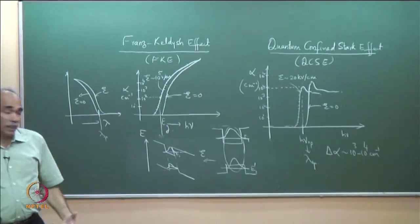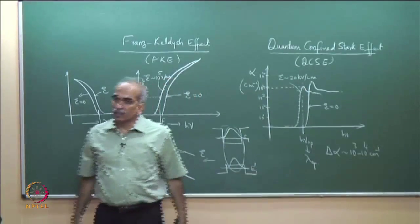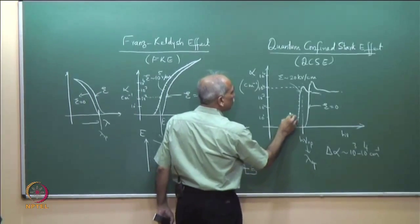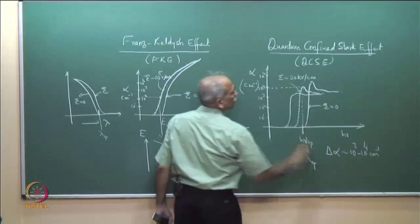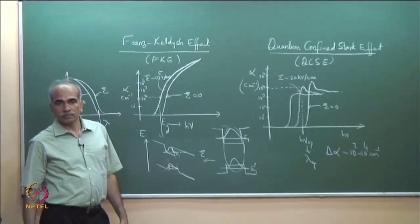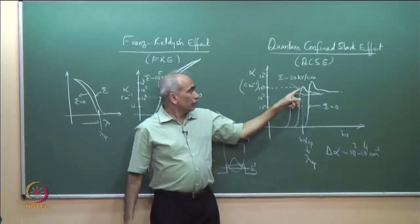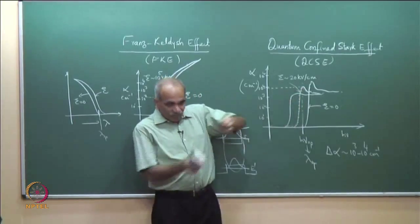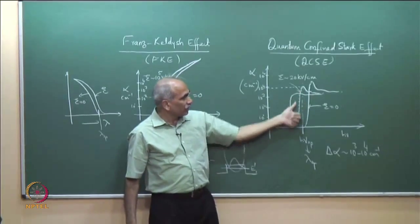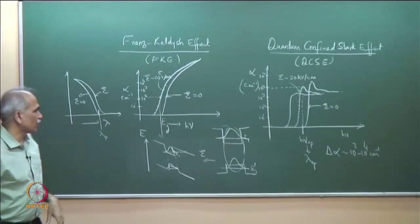They are not separated because quantum confinement still blocks them, but the electron has a probability to tunnel out, which means there is an increased probability of dissociation. Therefore, the excitonic peak goes down — just like increasing the temperature causes the excitonic peak to go down. So we would like to use the excitonic resonance peak, but not apply too strong a field.